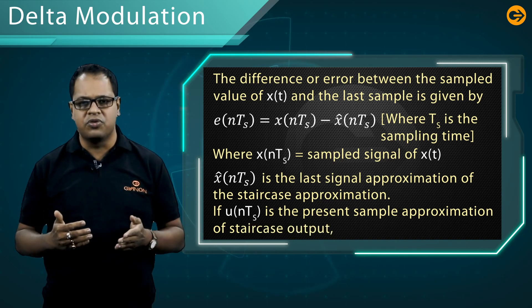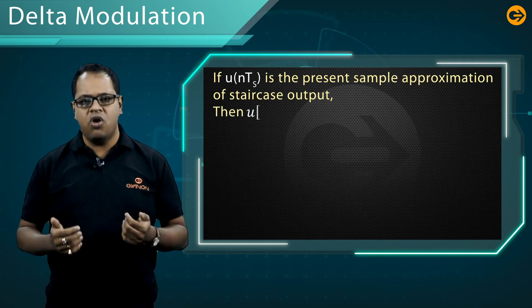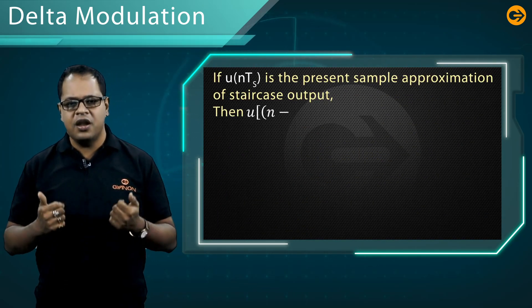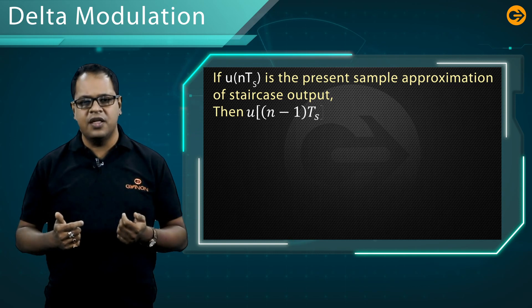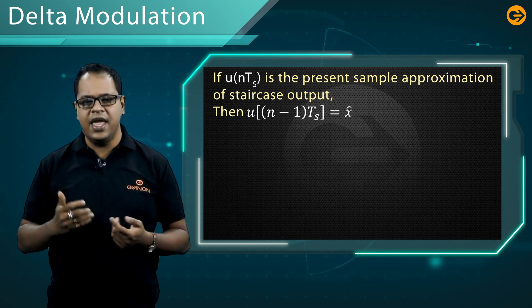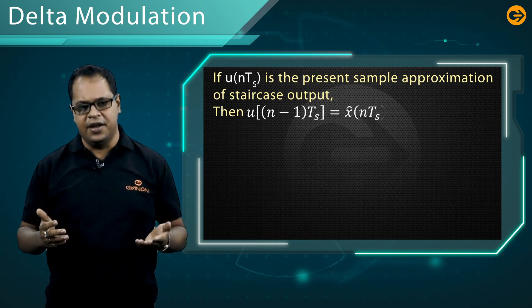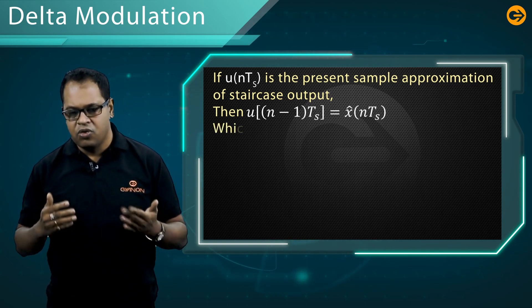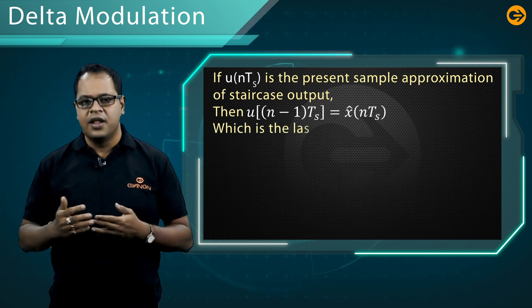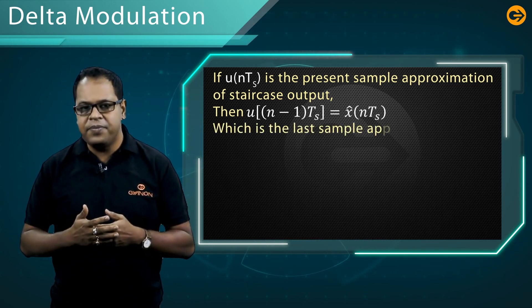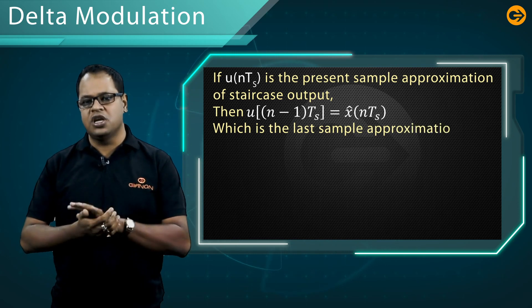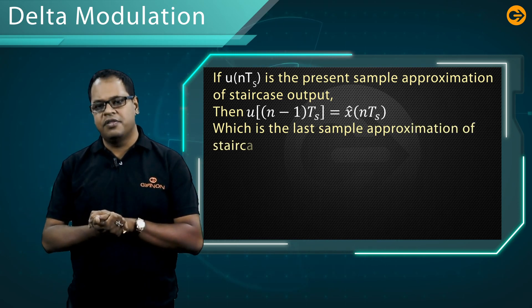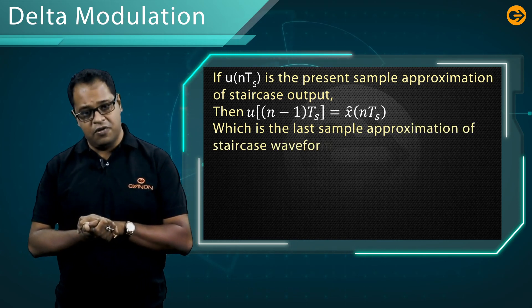If u(nTs) is the present sampled approximation of the staircase output, then u((n-1)Ts) is equal to x̂(nTs), which is the last sample approximation of the staircase waveform.